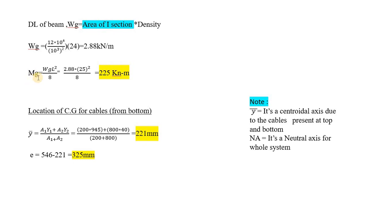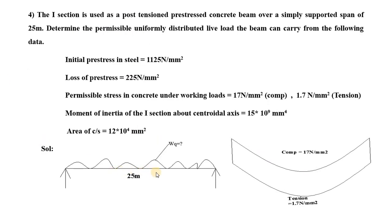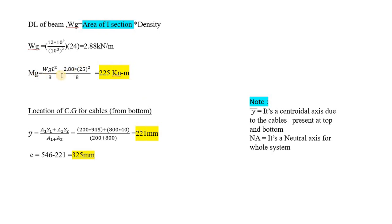Next is moment due to dead load. The standard formula for a simply supported beam carrying a UDL is WL square by 8 — the bending moment at the center is WL square by 8. The notation is MG for moment due to dead load and WG for the load. The value is 2.88 kilonewton per meter into 25 meter squared by 8. You will get 225 kilonewton meter.